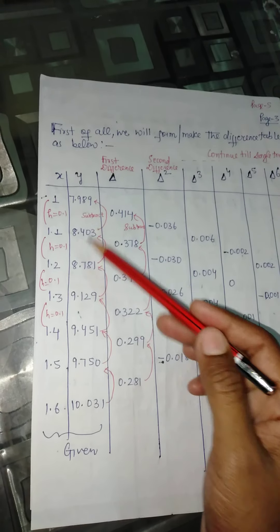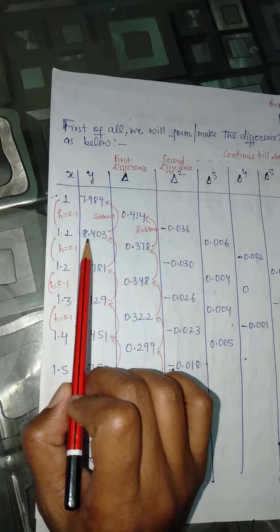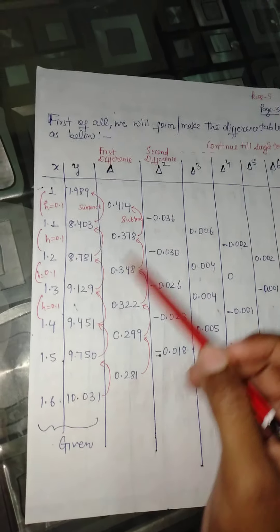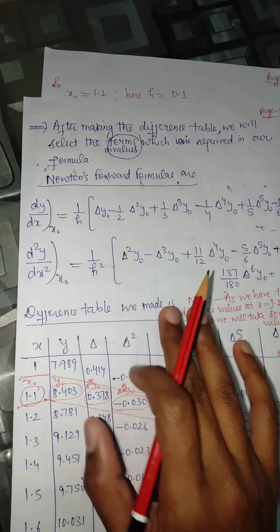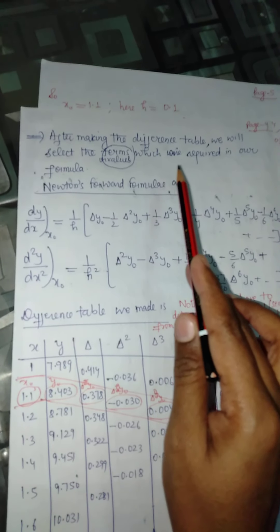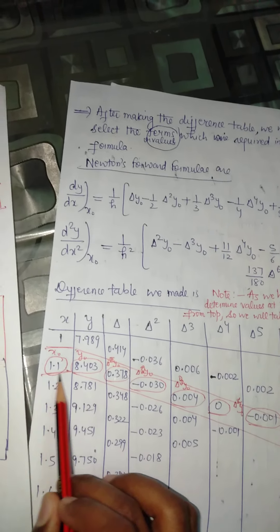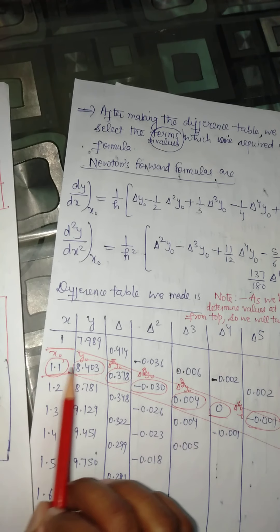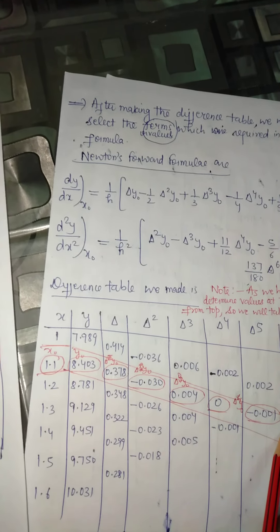First, we need to derive the difference table. These are the values of x and values of y. We subtract 7.989 from 8.403 to get the first difference, and continue using subtraction to fill the table. This gives us the first difference, second difference, and so on. After making the difference table, we select the first term required by the Newton forward formula, which corresponds to x = 1.1.